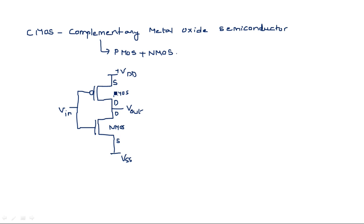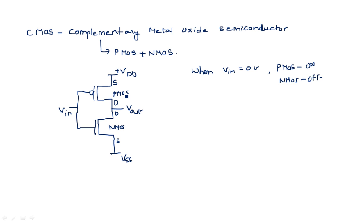When input is equal to zero volts, or logic zero, the PMOS transistor comes into on state and the NMOS transistor comes into off state. As the PMOS transistor is in on state, there is a direct connection between VDD and the output, so output equals VDD. This means PMOS pulls up the output, which is why the PMOS transistor is known as the pull-up transistor.